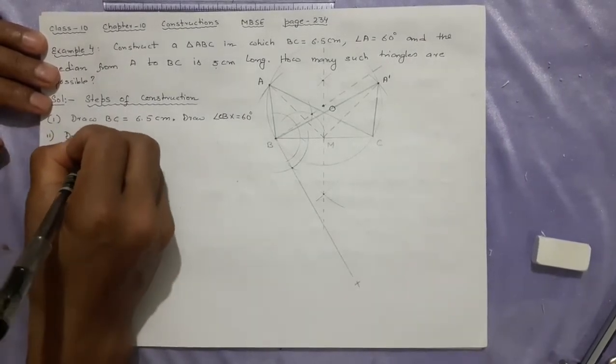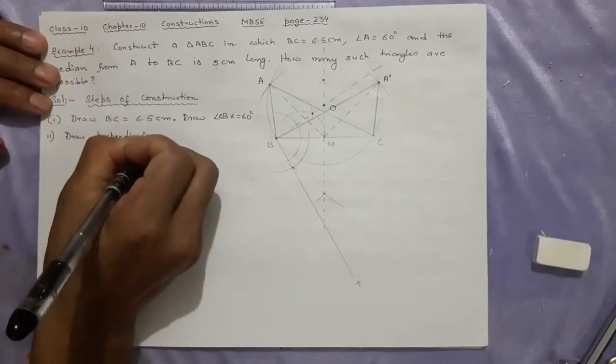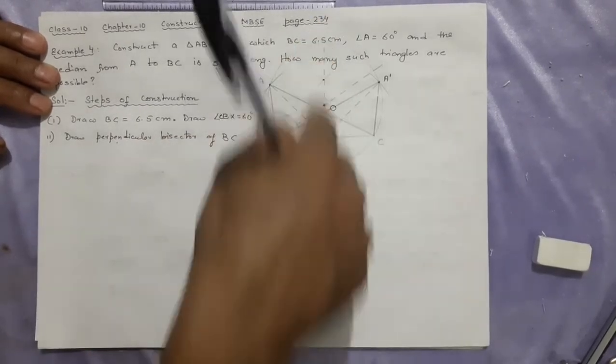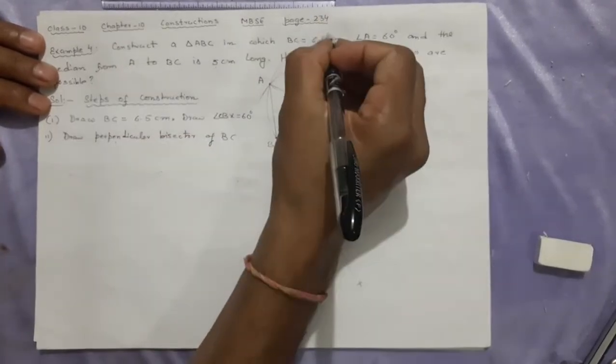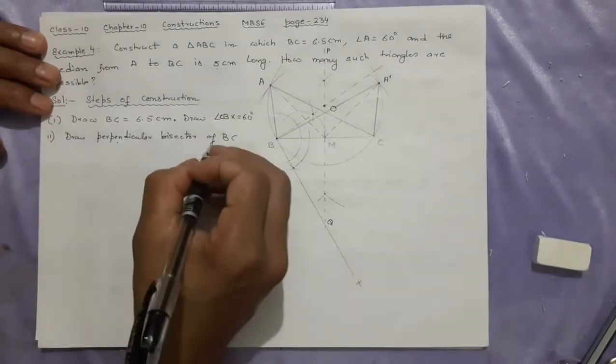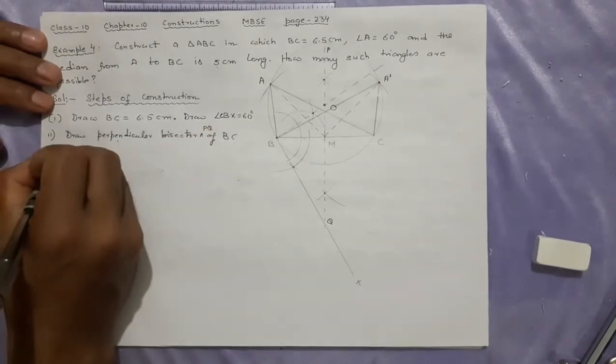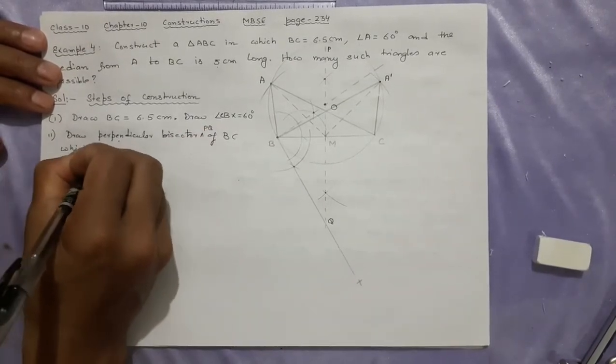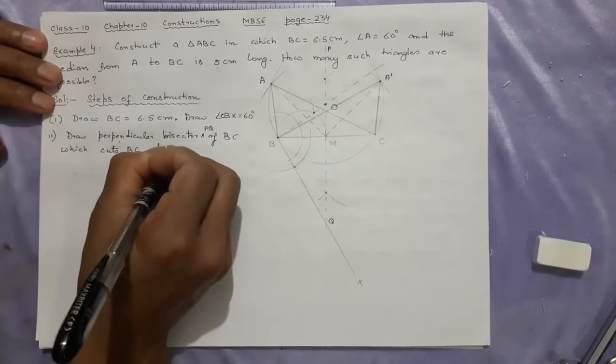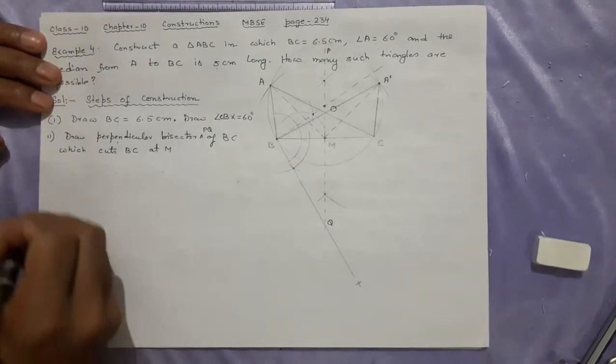Next step. Draw perpendicular bisector of BC. I think in the previous we gave this name PQ. Remember? Same you can do here also. PQ bisector of BC. Which cuts BC at M. When you are making the perpendicular bisector, it should cut at M. Next step.